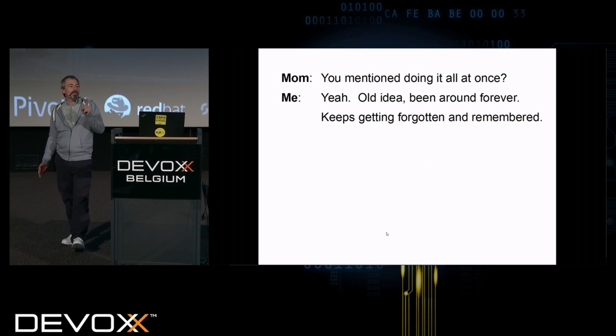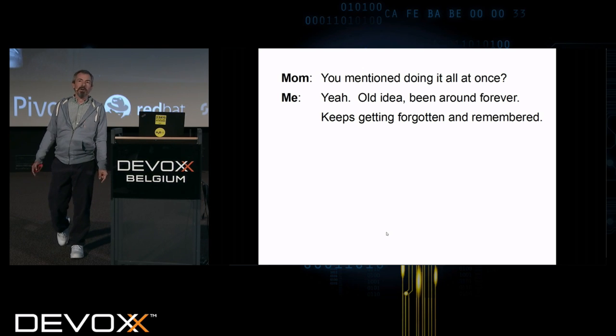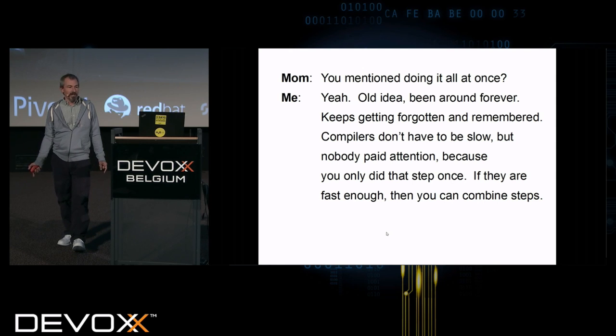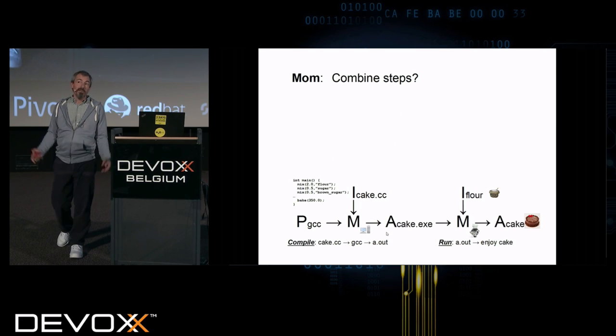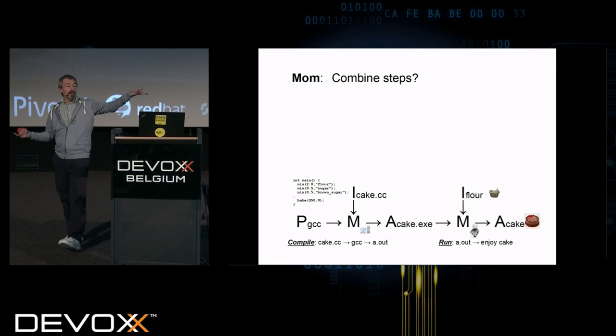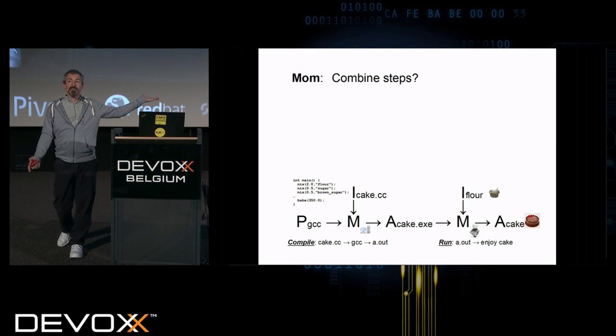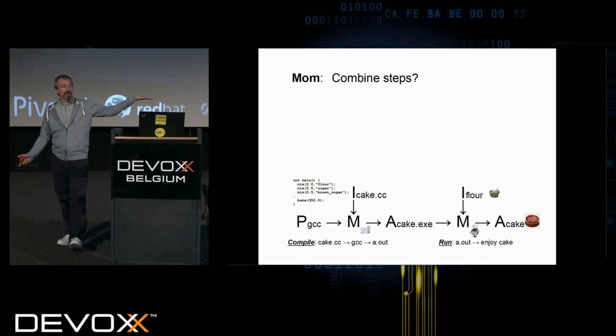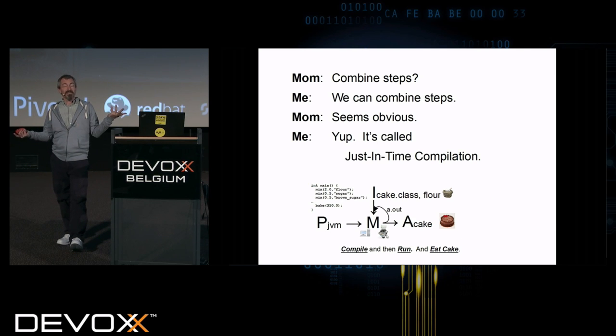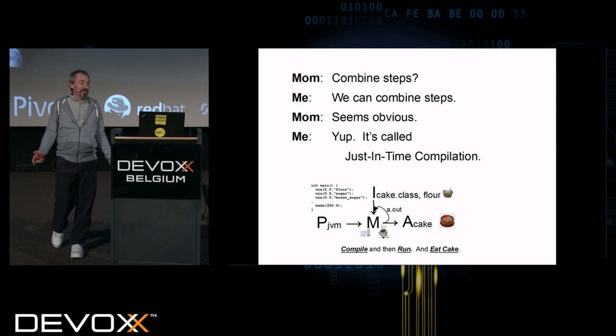And you mentioned doing it all at once? It's this old idea. It's been around forever, it keeps getting forgotten and remembered. Compilers don't have to be slow, but nobody paid attention because you only did that step once. If they're fast enough, you can combine the steps. Combine them? Yeah. So in my example here where I'm taking this C compiler and my cake.cc, one step is to reduce the machine code. And the next step is to actually run the machine code to get my cake. We can combine the steps. Seems obvious.